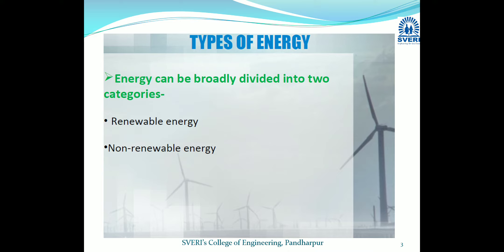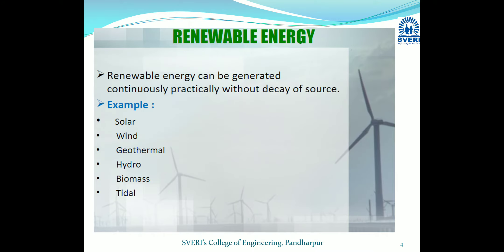Now, basically, energy is divided into two categories: renewable energy and non-renewable energy. Renewable energy sources are inexhaustible — they can be generated continuously, practically without decay of the source, and we can use them throughout our lives. Examples include solar, wind, geothermal, hydro, biomass, and tidal energy.